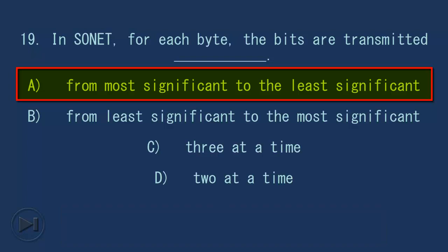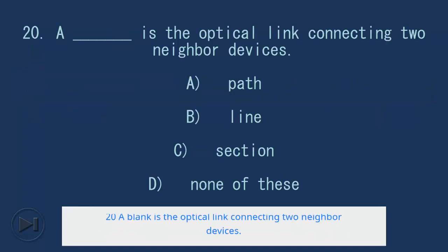20. A blank is the optical link connecting two neighbor devices. A. Path, B. Line, C. Section, D. None of these. Answer: C. Section.